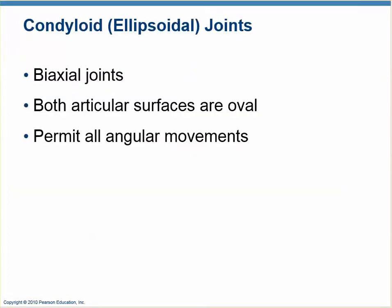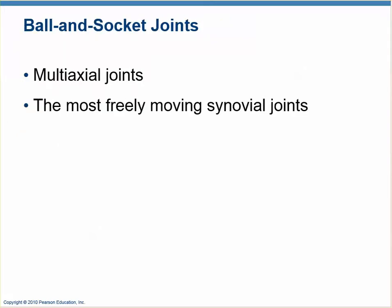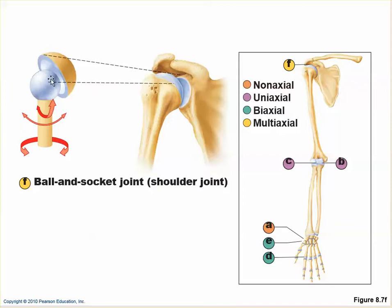Before covering the condyloid joint, it helps to start with the ball and socket joint. A ball and socket joint is just what you'd think — there's a ball and a socket, and because the ball is a sphere and the socket matches it in all directions, it allows multi-axial movement: medial and lateral rotation, flexion, extension, abduction, and adduction. This is the joint type that allows the most motion, though it also tends to be the least stable.